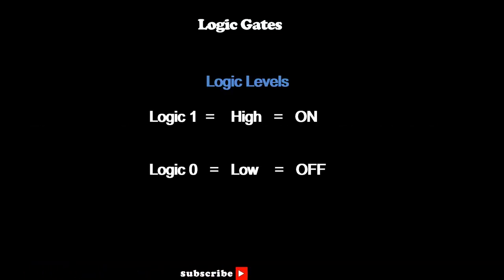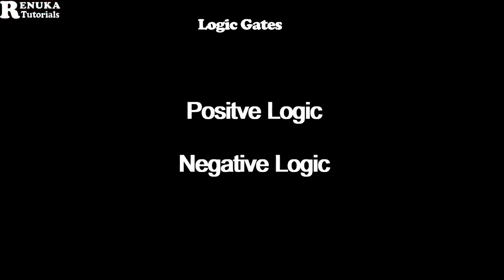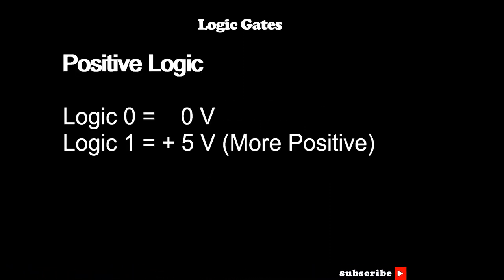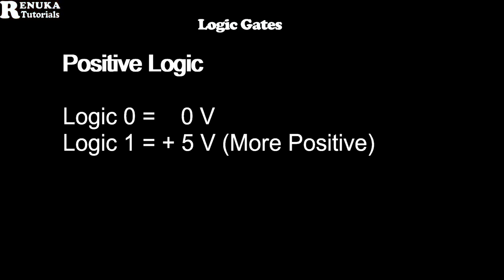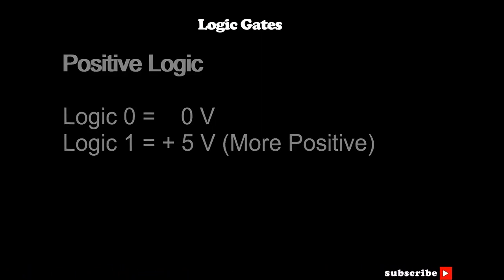This logic gate works on logic levels. The logic levels are high and low, 0 and 1. There are two types of logic systems used: positive logic and negative logic. In the positive logic system, logic 0 is represented by a low voltage level and logic 1 by a high voltage level. That is, more positive voltage is considered as logic 1 and more negative as logic 0. The positive logic system is widely used.